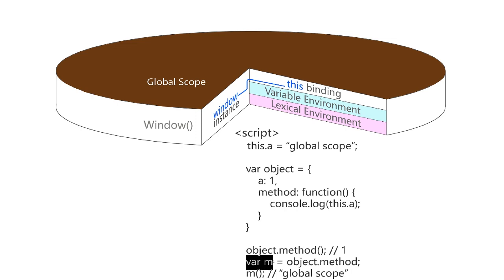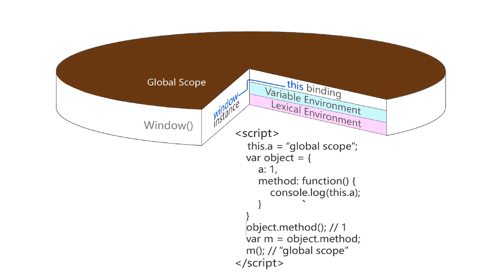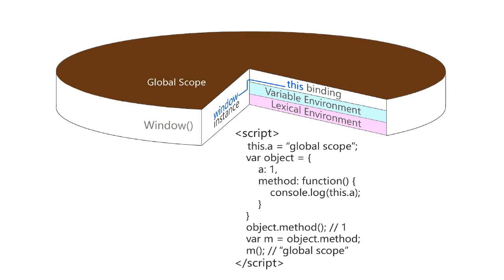This is happening because `m` was called from the global scope. But in the previous instance, because it was called from the name of the object that was created, it's no longer called from the context of the global scope — and for that reason, the `this` keyword in property `a` is taken from the object itself; it's kind of private to that object. When the execution of the script reaches this method, calling it will create another execution context added to the call stack, and once this method returns, it will disappear from the stack.